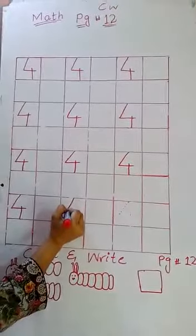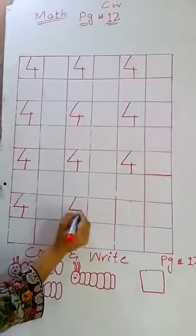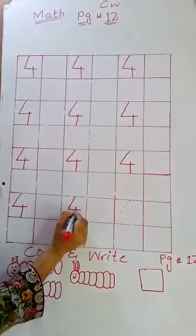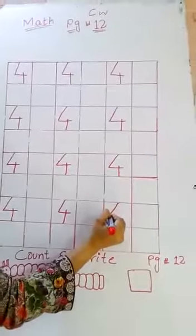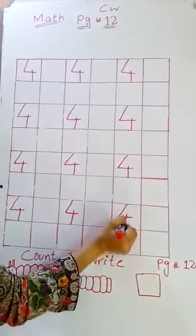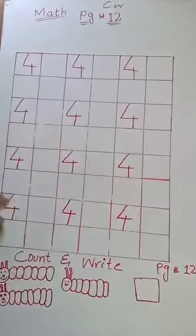Join this dot up to down, then join this dot with a sleeping line, then a standing line. This is four. Zero, one, two, three, four.